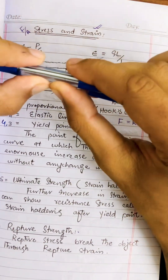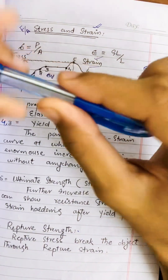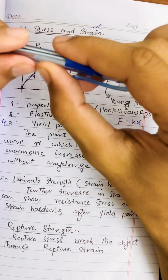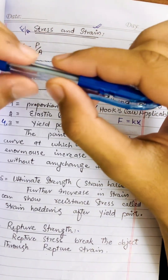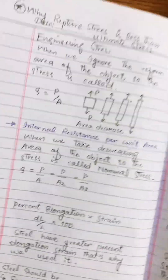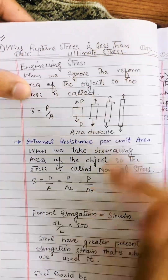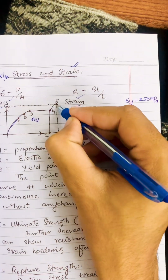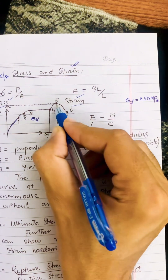Consider a pin that breaks at 10 newtons — but why does it break at only 8 newtons instead? This is the core question: why is the rupture stress less than the ultimate stress? The rupture stress is the sixth point and the ultimate stress is the fifth point on the curve.